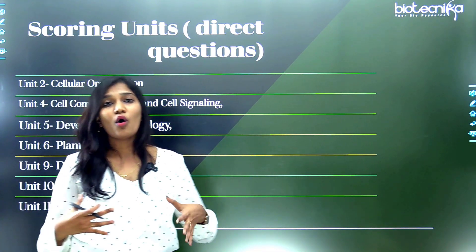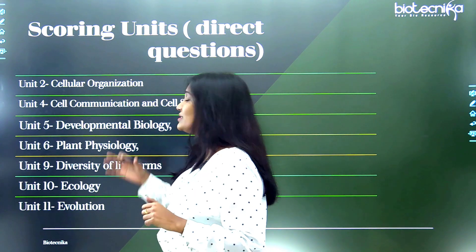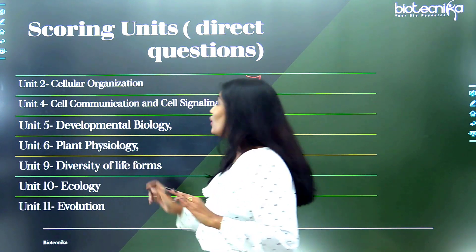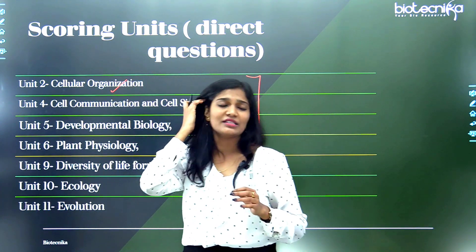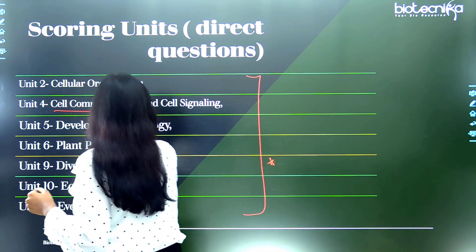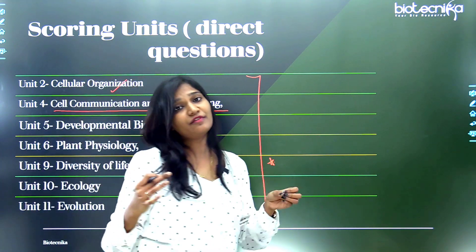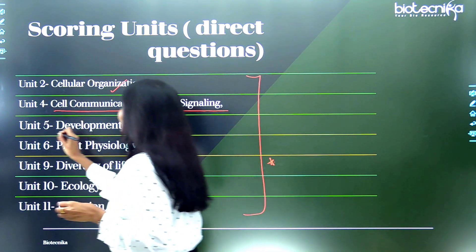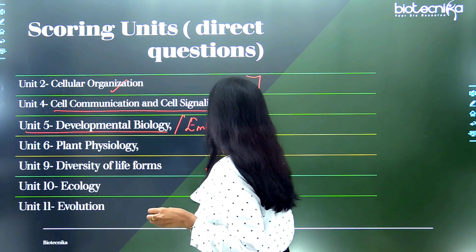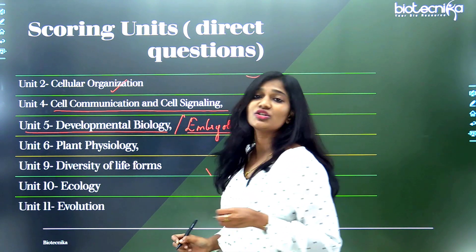Now, what are the scoring units where you get a lot of direct questions? Please make note — it's really important. You should always study unit two: cellular organization — a very simple and easy chapter. Next is unit four: cell communication and cell signaling — another promising chapter you must definitely study. Next is unit five: developmental biology, also known as embryology — a chapter from which many direct questions come.